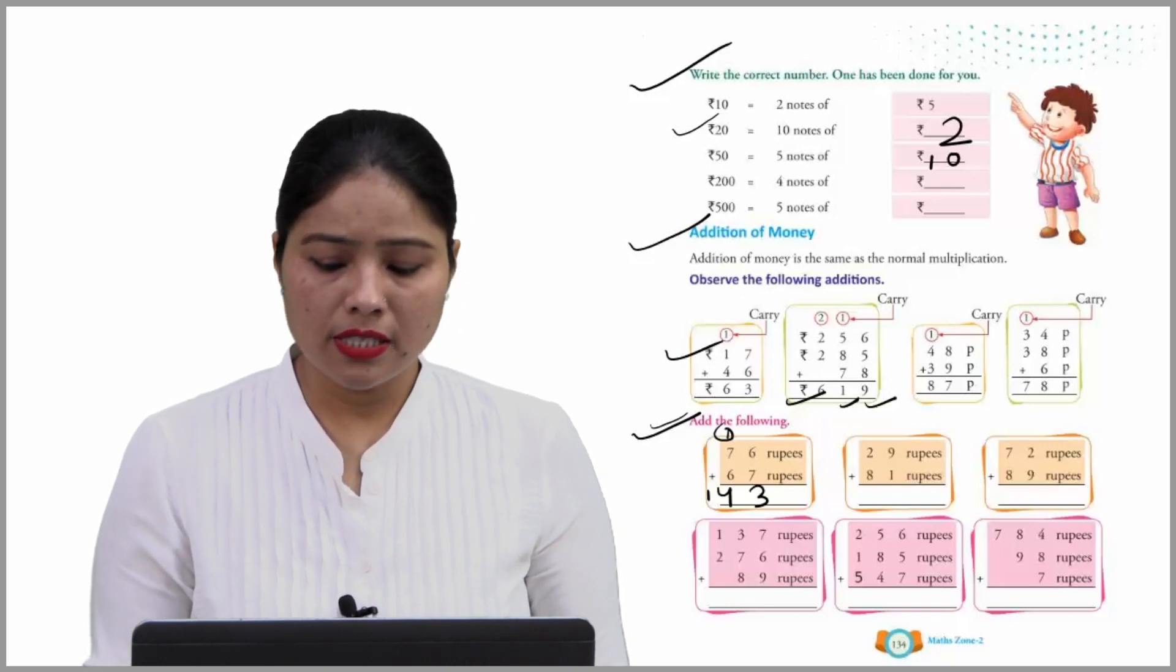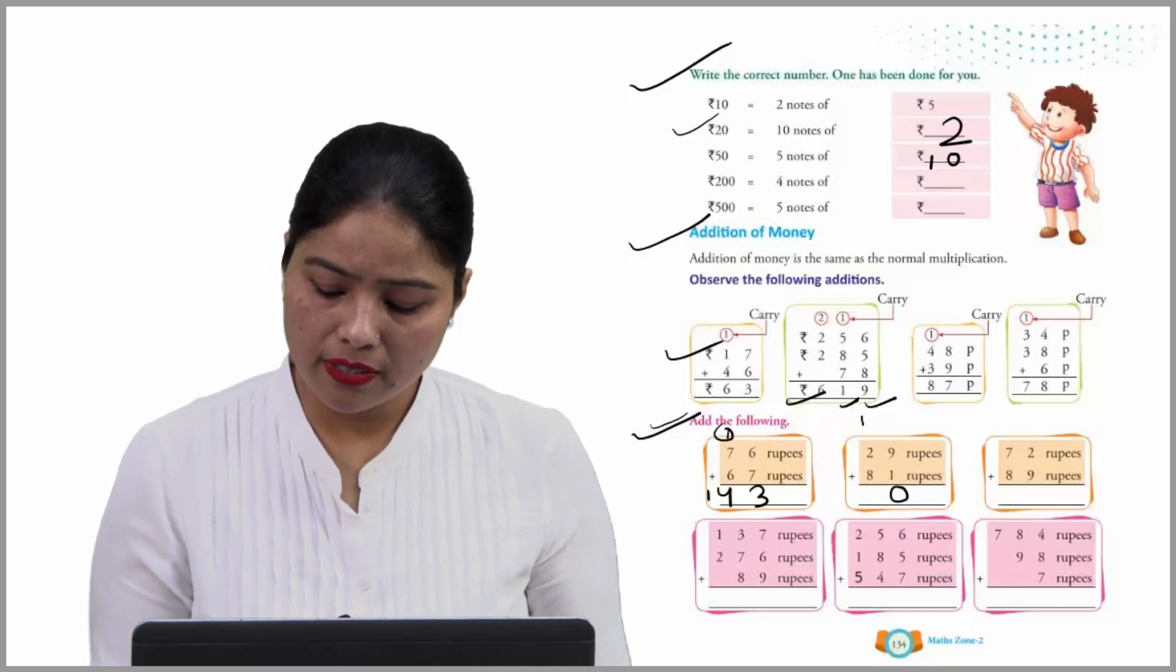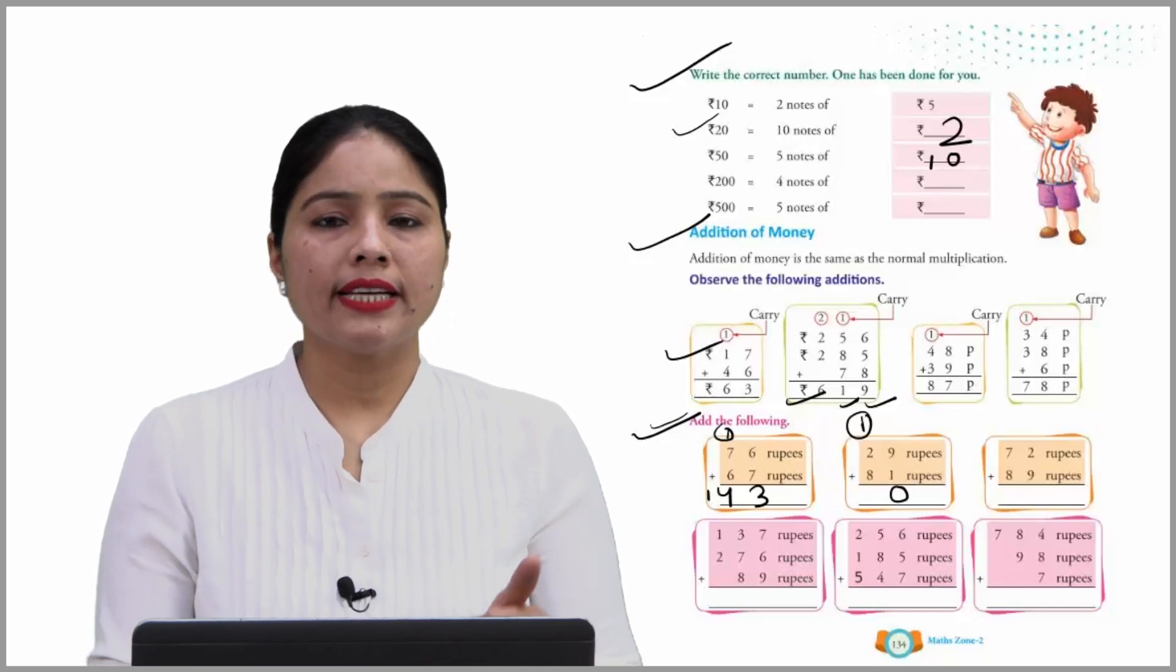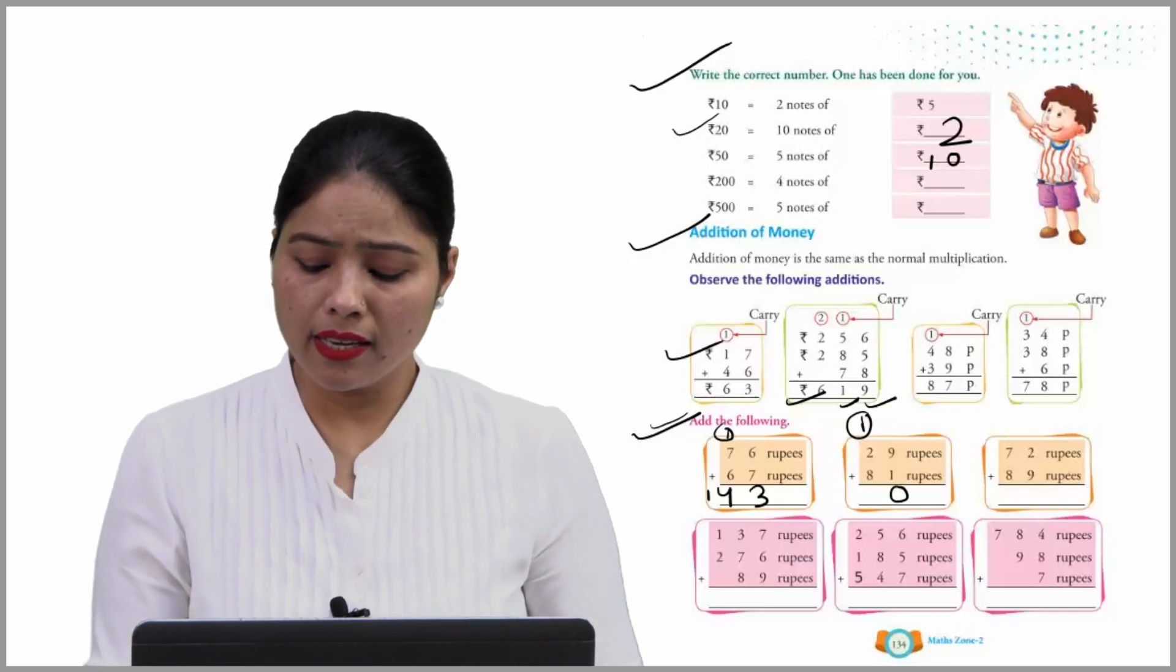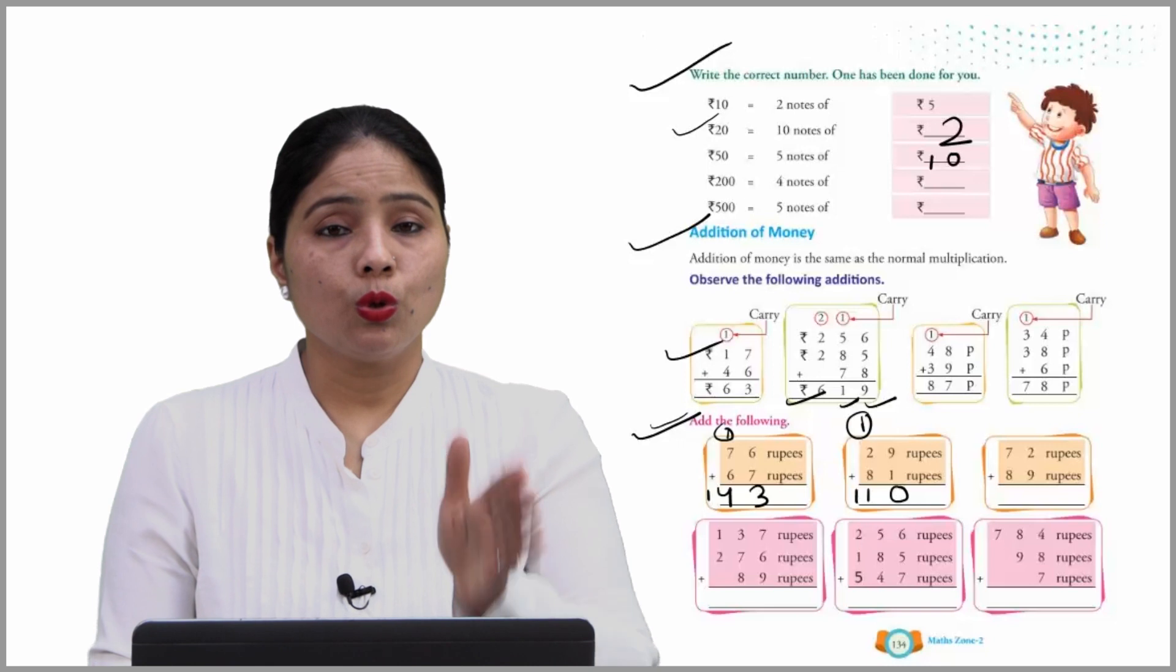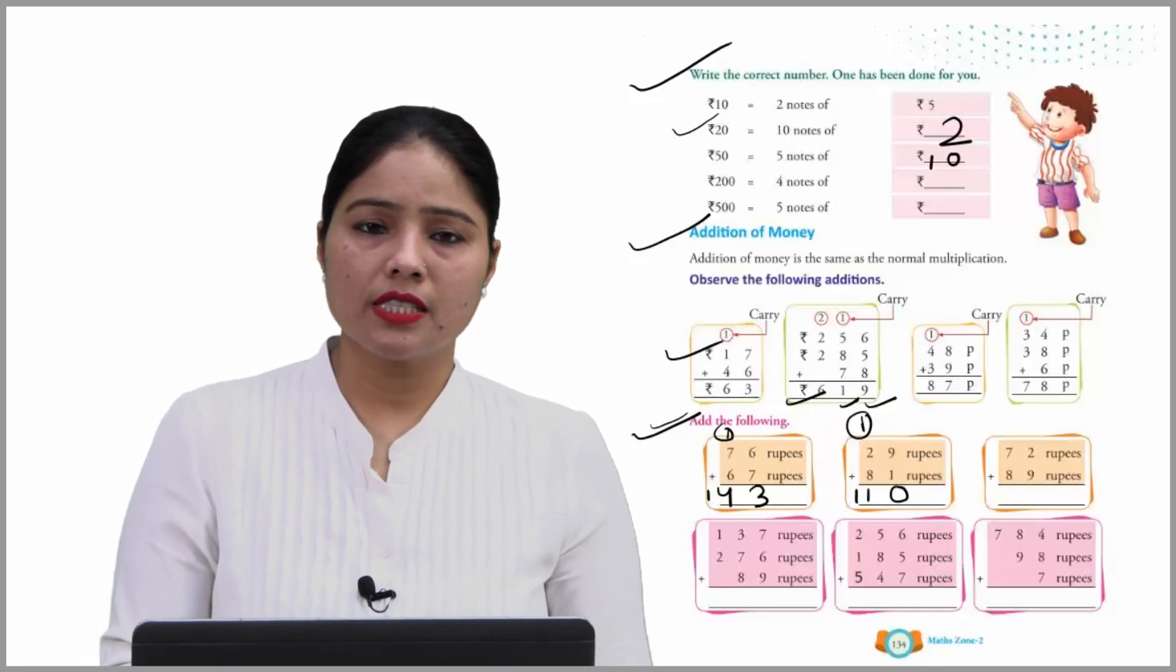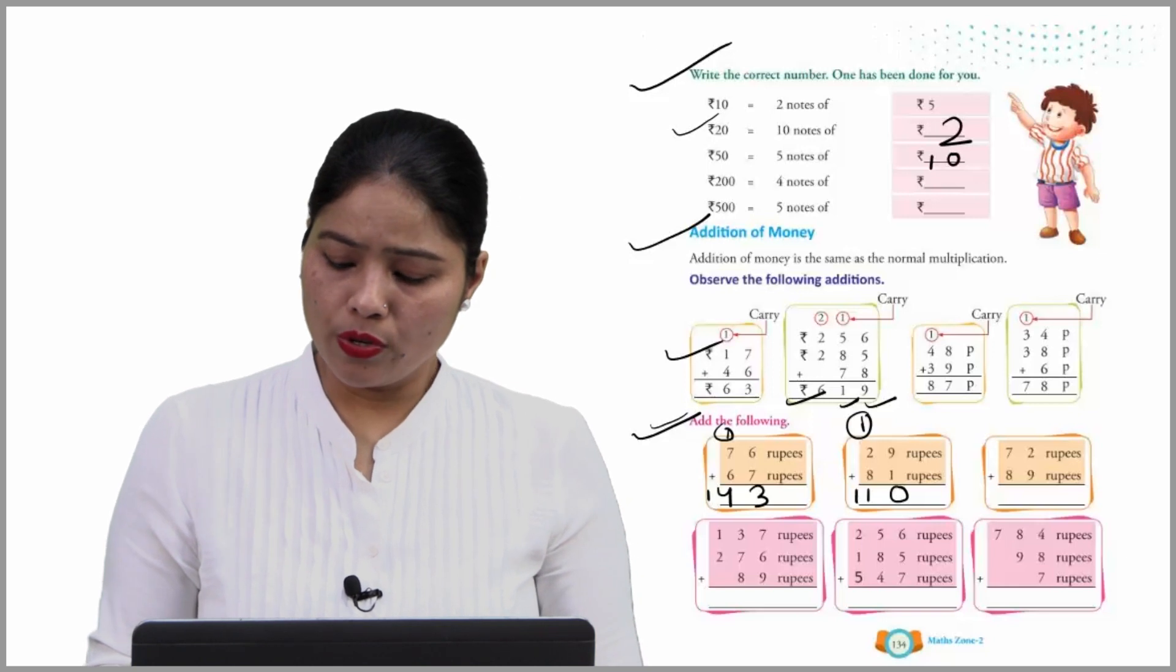Next: 9 plus 1 is 10. So write 0, carry 1. 8 plus 2 is 10, and 10 plus 1 carry is 11. So 11 rupees. This is how we fill the other blanks. This is very easy. So now next one.